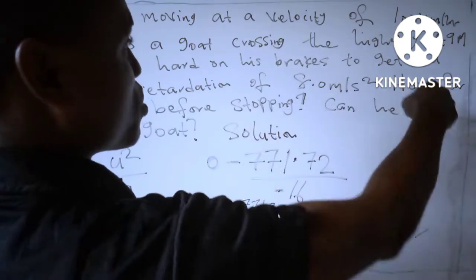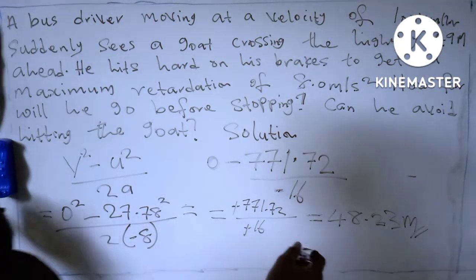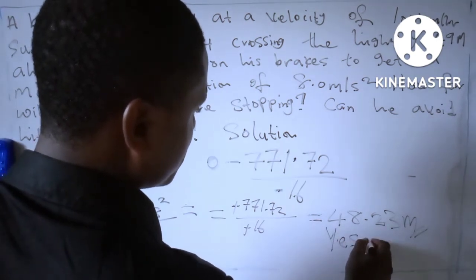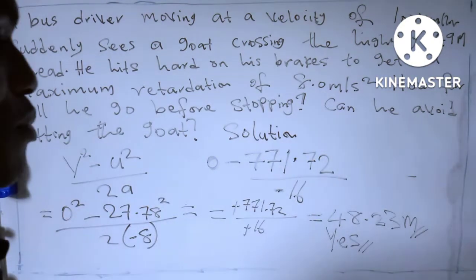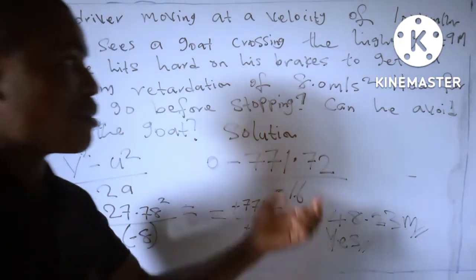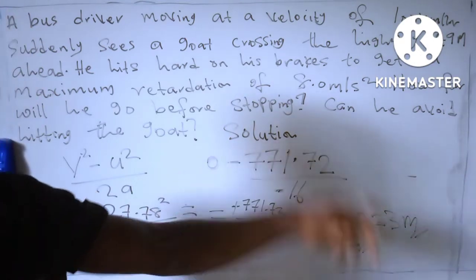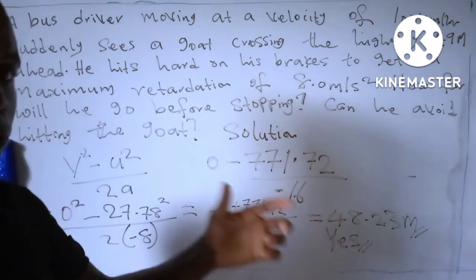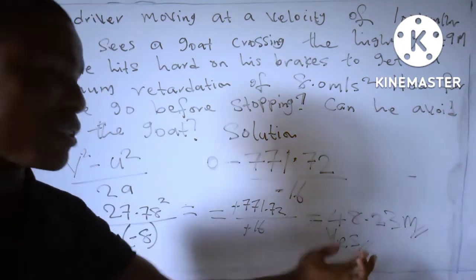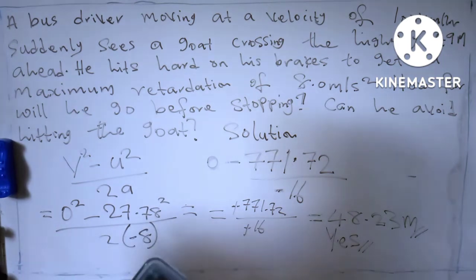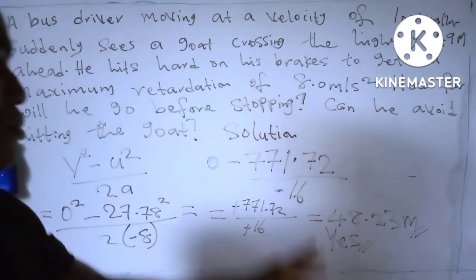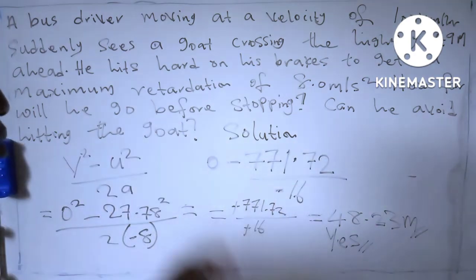The goat was 49 meters ahead, and the bus stops after 48.23 meters. So yes — the bus will stop before reaching the goat, meaning it can avoid hitting the goat. The answer to the second question is yes: the bus will stop before the goat, so it avoids a collision. Our final answers are 48.23 meters, and yes, the bus avoids hitting the goat.